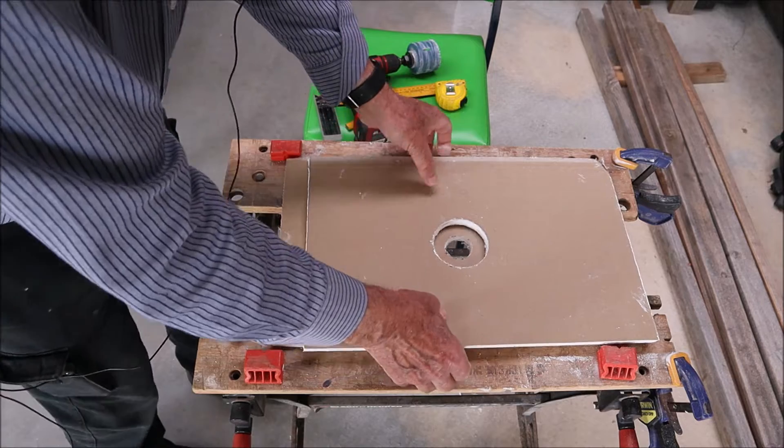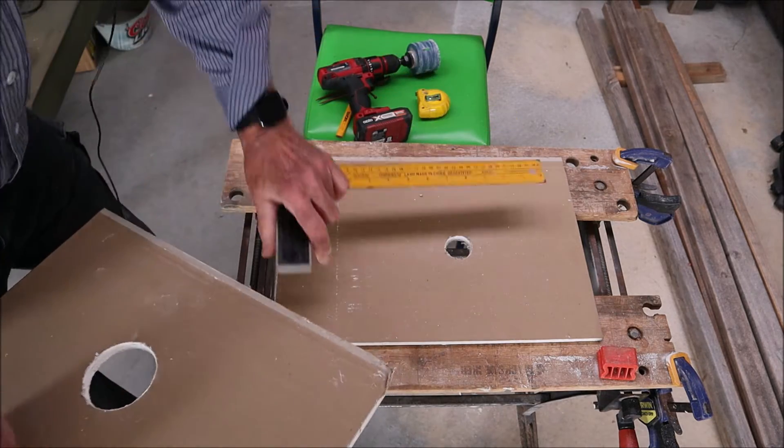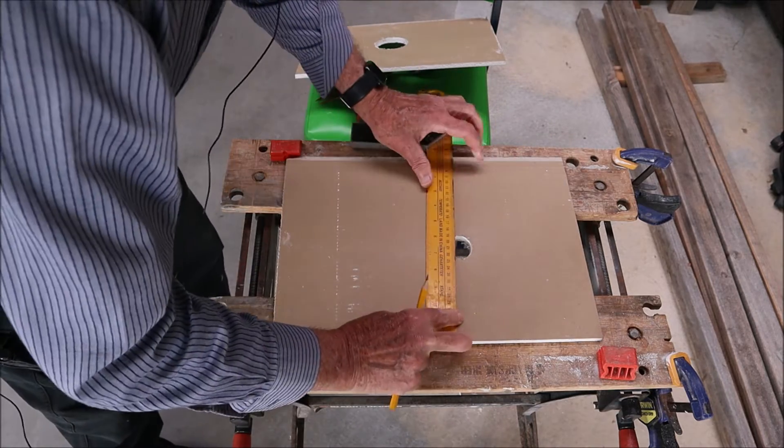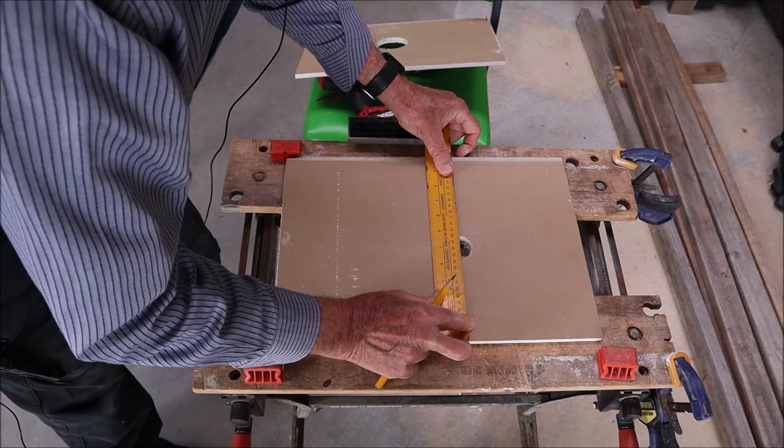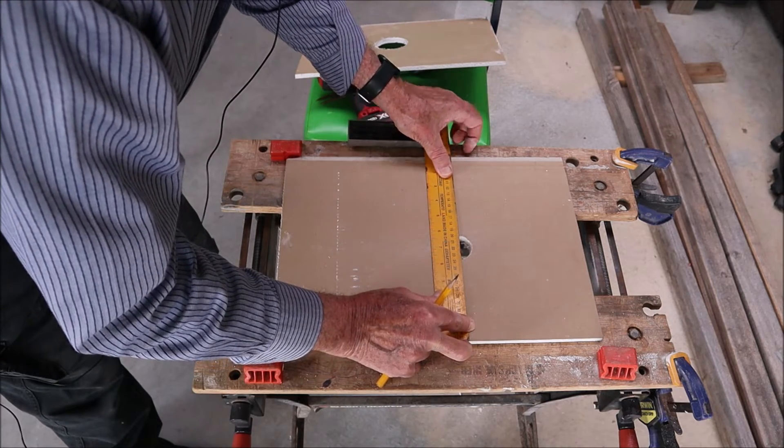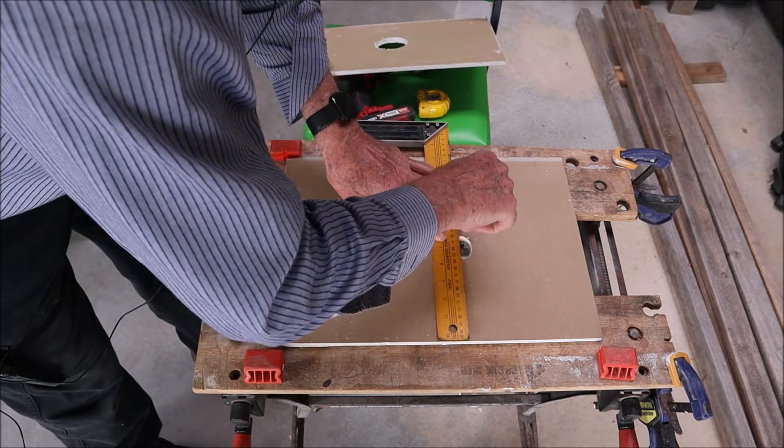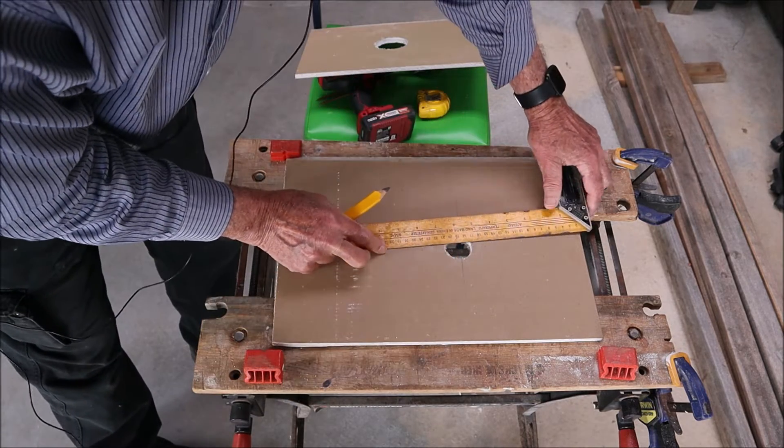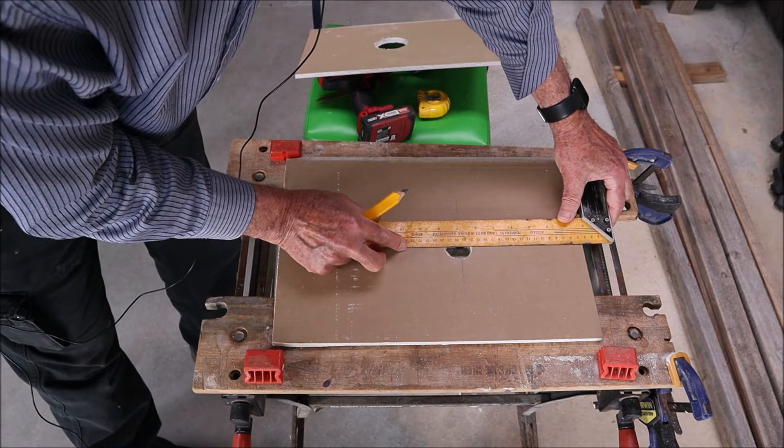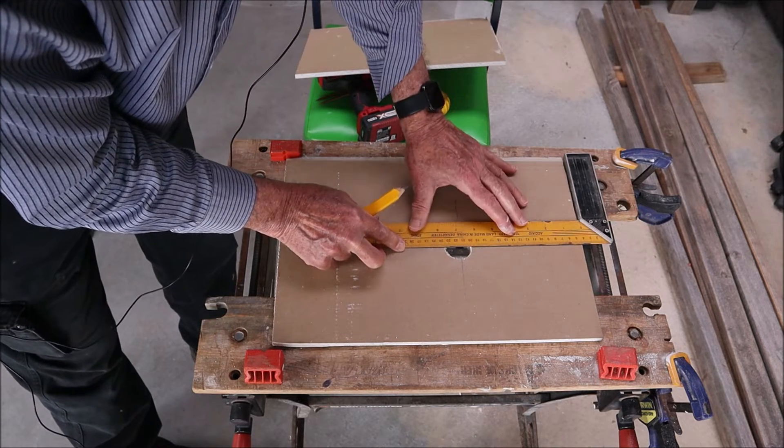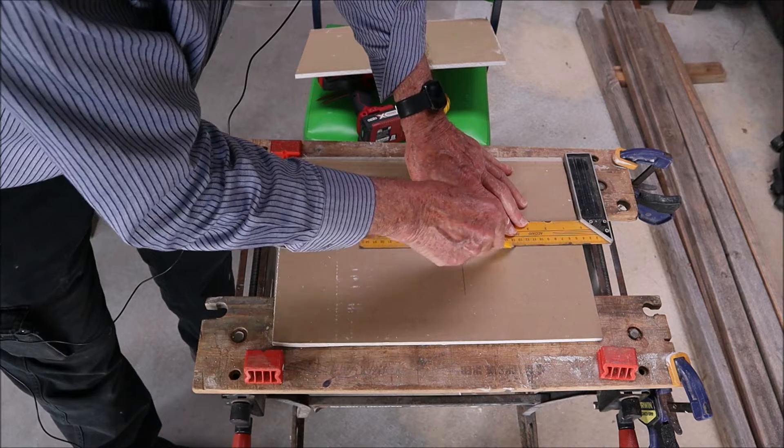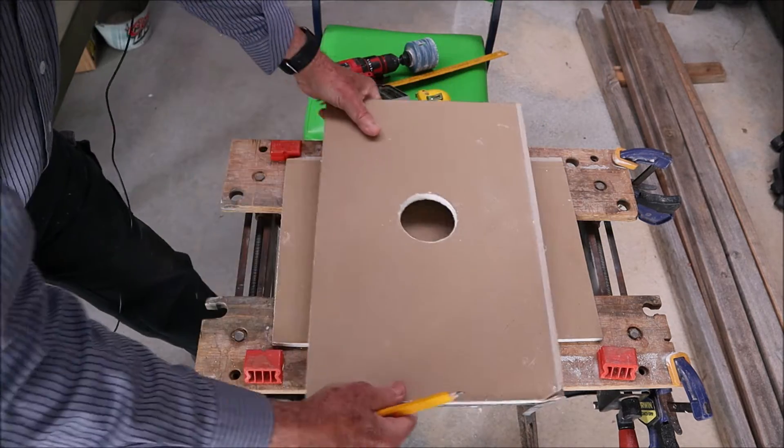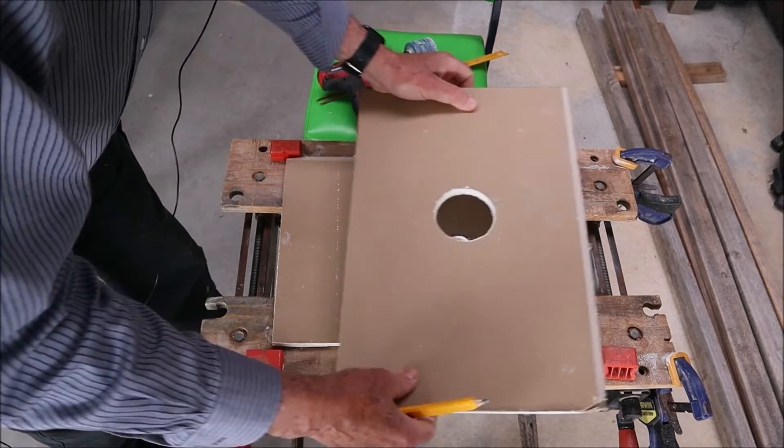What you can do is just get a ruler and find out more or less where the widest point on the old hole is, that's about there, and then draw a line straight across like that. And then do it again at 90 degrees, more or less there for another line.